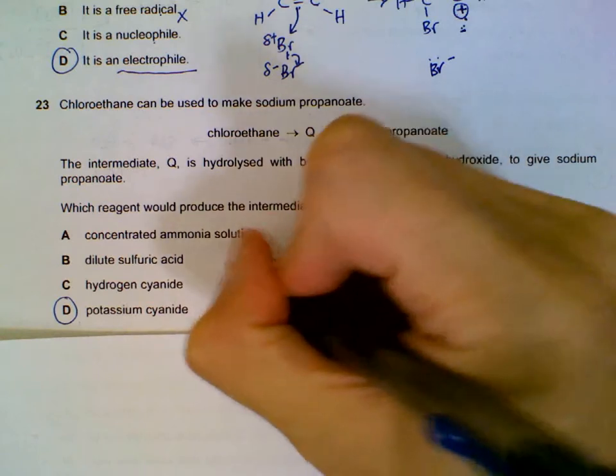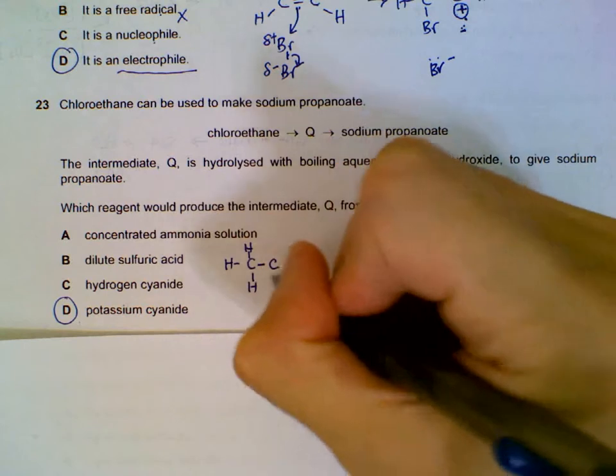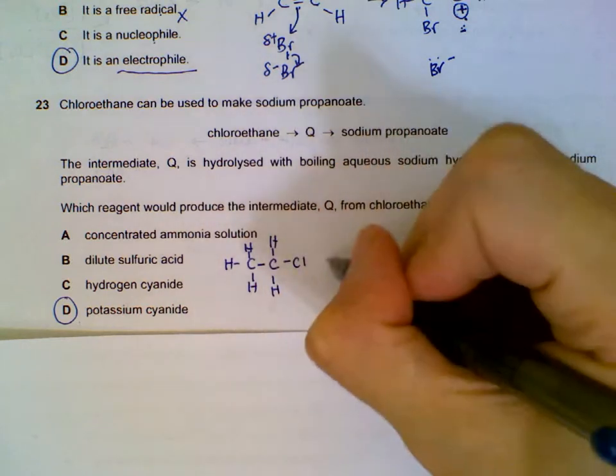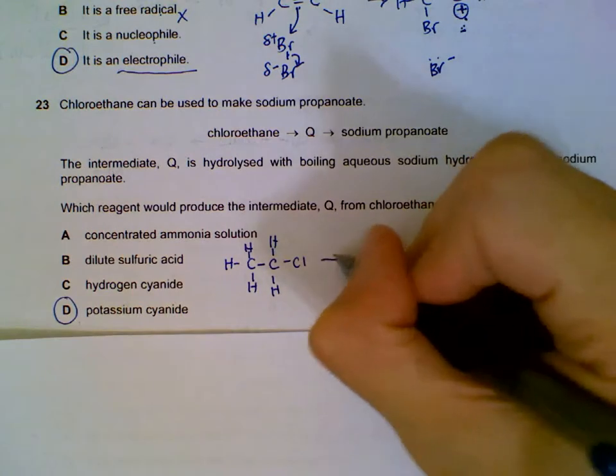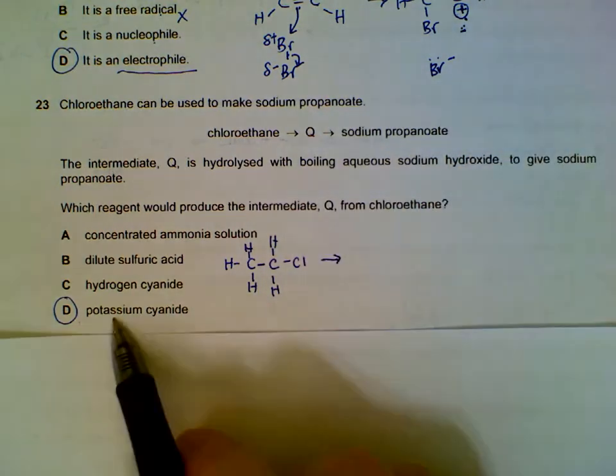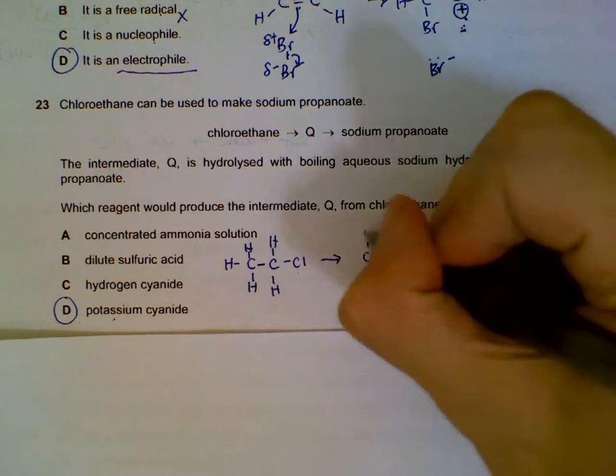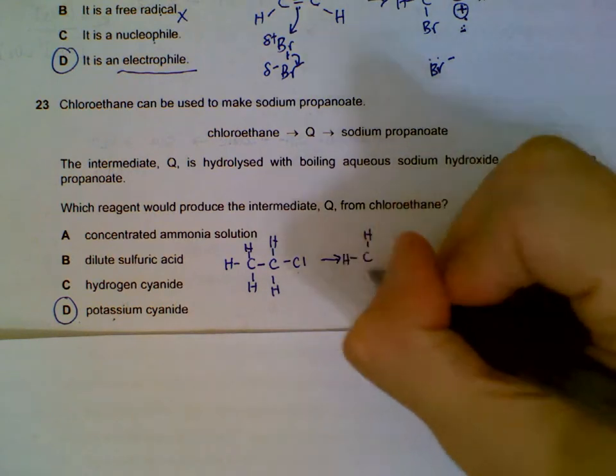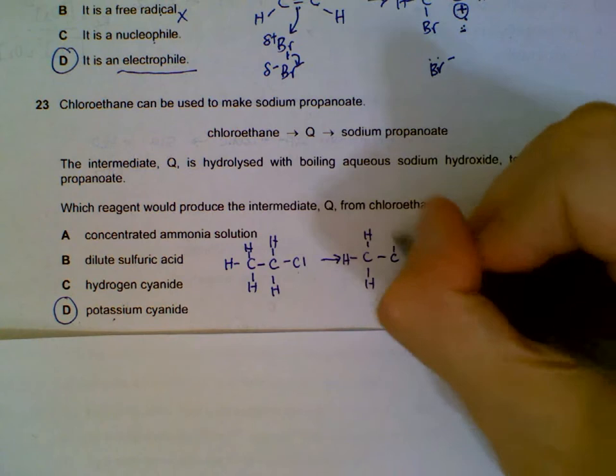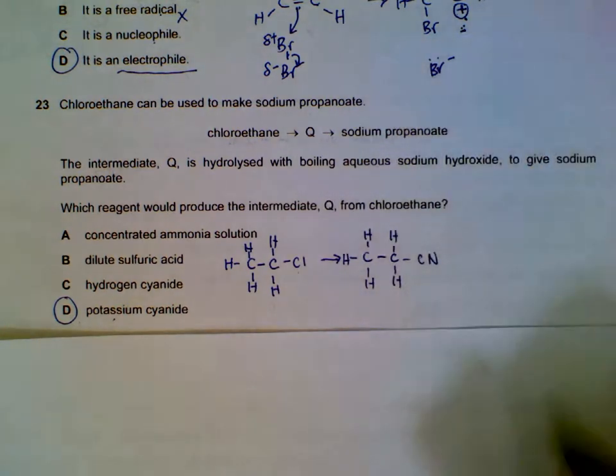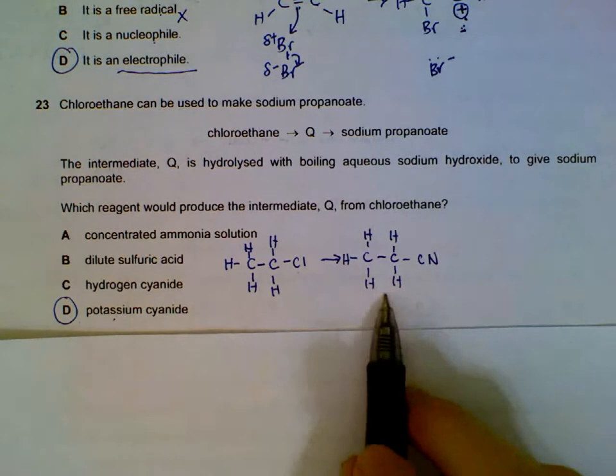I'll draw the structures. Chloroethane - if you add sodium cyanide or potassium cyanide to it, the CN actually replaces the Cl. We end up with a nitrile group, so this is actually Q.